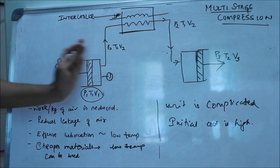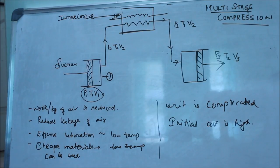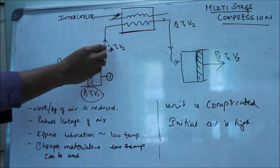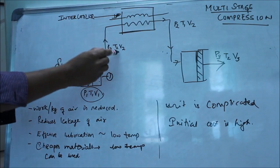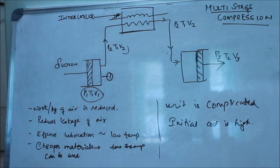Then it will get compressed to an intermediate pressure of P2. This leads to a rise in temperature when we compress the volume of air. The volume reduces and the temperature increases, so T2 will be greater than T1.